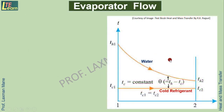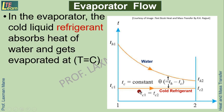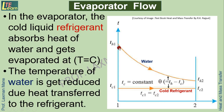Looking at the temperature distribution diagram for the evaporator: the cold refrigerant temperature is very low and, being a two-phase substance, it absorbs heat from the water and vaporizes at a constant temperature, meaning TC1 equals TC2. The temperature of the water decreases from TH1 to TH2 because its heat content is absorbed by the cold refrigerant.